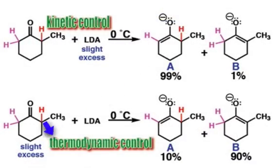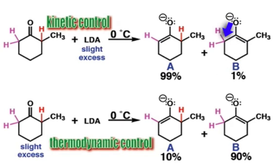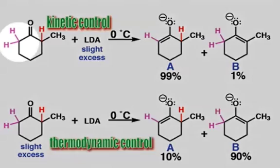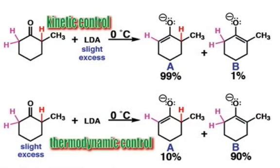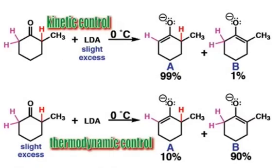Now let's take a look at the concept of thermodynamic versus kinetic control of enolate formation. With a slight variation in reaction conditions we can drastically alter which enolate is formed. Comparing the two enolates A and B, we know that B is the most stable because it contains the most substituted double bond. However, enolate A is formed fastest because there are two protons — twice the chance of LDA deprotonating on the left side — and a methyl group which provides slight steric hindrance to the deprotonation of the protons shown in red.